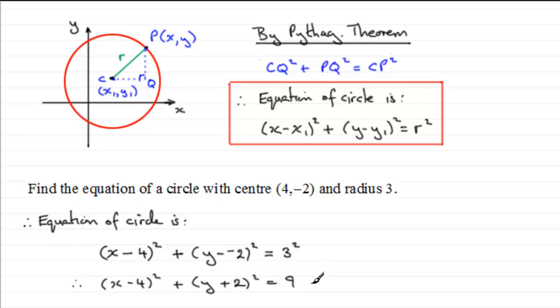Okay, well I hope that's given you a start anyway on finding the equation of a circle, giving its centre, as I say, the radius and any point P on the circumference.